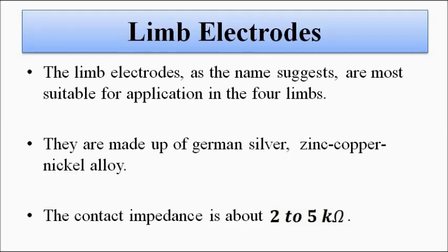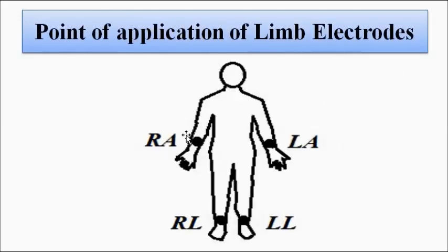Limb electrodes, as the name suggests, are suitable for application on the four limbs of the body — the arms and legs. These electrodes are generally made of German silver, an alloy of zinc, copper, and nickel. The four points of application are the two legs and two arms, notated as left arm (LA), right arm (RA), left leg (LL), and right leg (RL). The electrodes are connected to these four points.